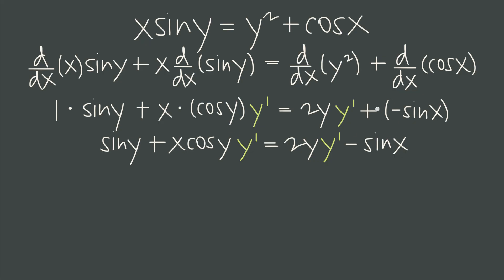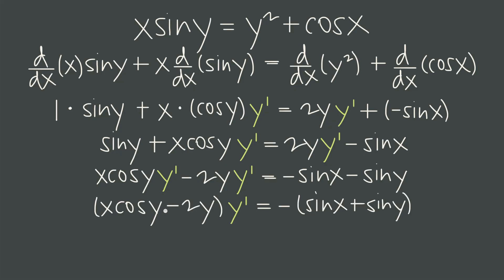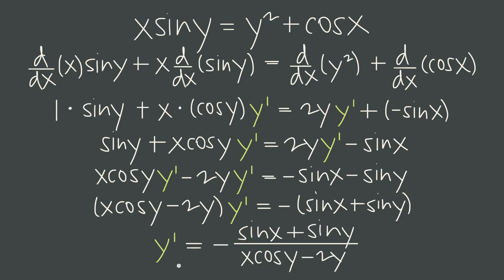We clear the parentheses and include the negative sign on the right side. Then we move all terms that include y prime to the left and all non-y prime terms to the right, subtracting 2y·y prime and subtracting sin(y) from both sides. We factor out y prime from the left side, optionally factor out a negative sign on the right, then divide both sides by what multiplies y prime — leaving y prime, the derivative, by itself using implicit differentiation without ever solving for y.